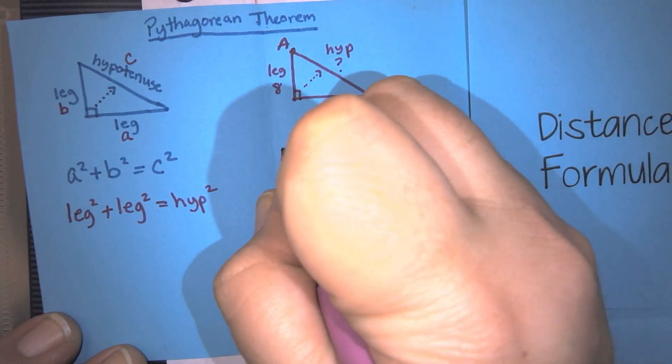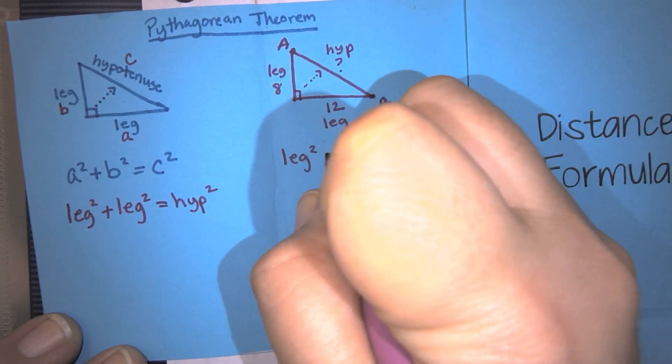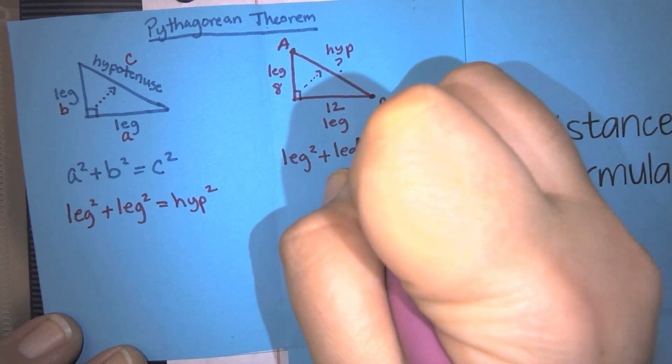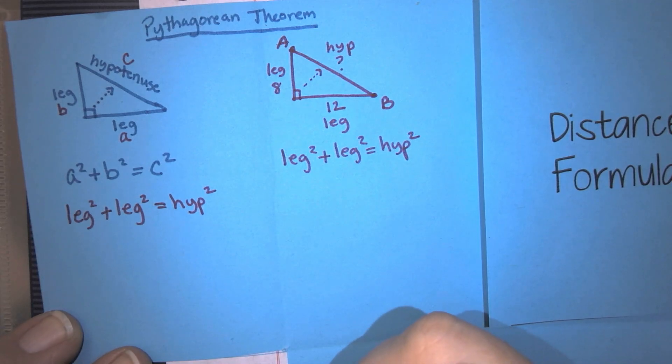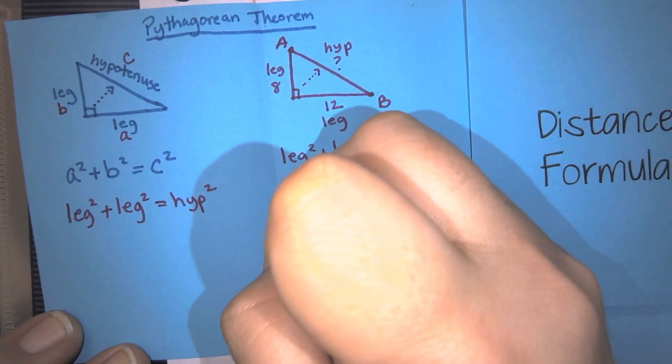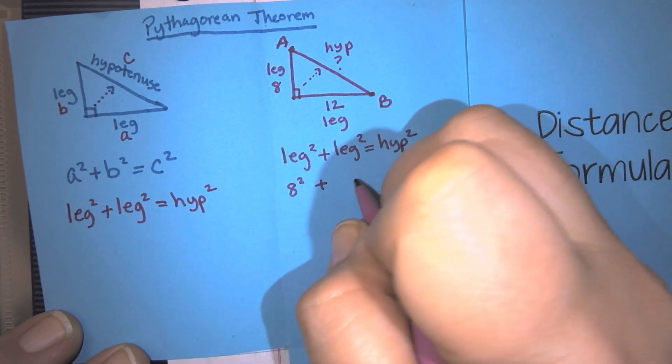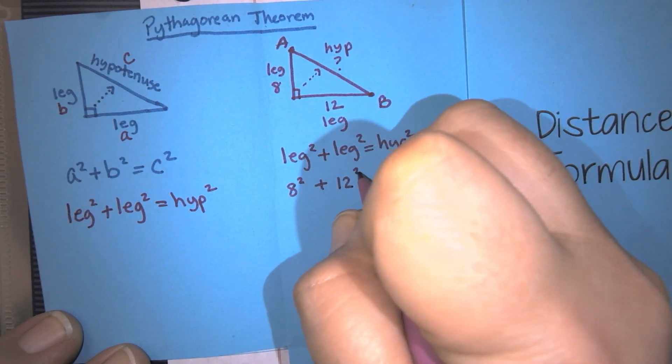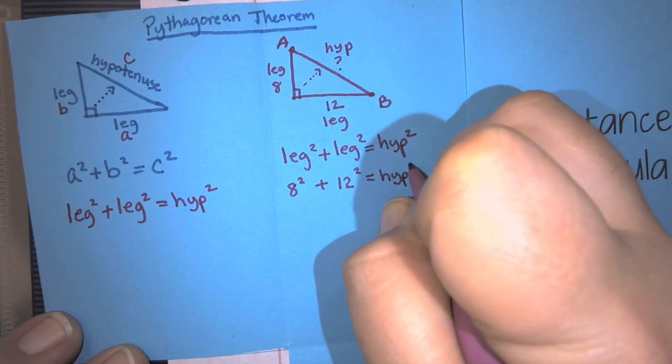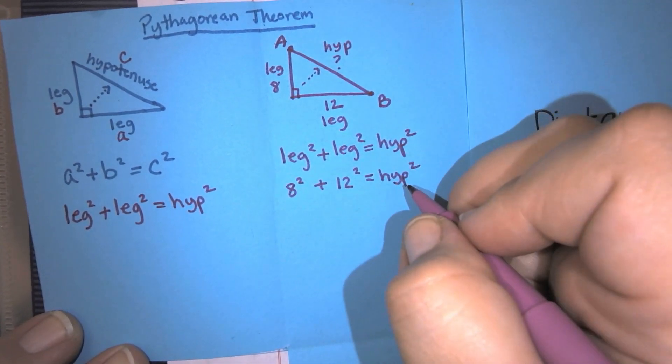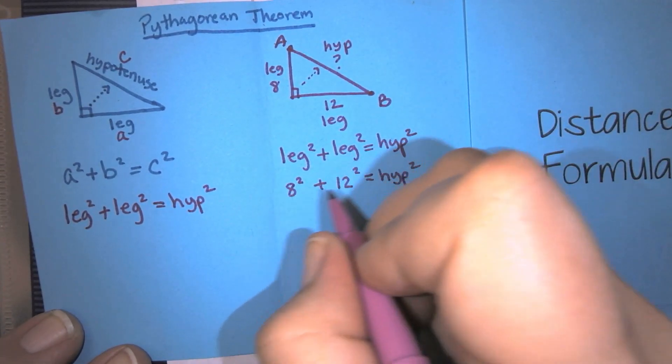So using the Pythagorean theorem, we can set up an equation that will help us figure out this side because I know these two sides. I just need to know two of them and I can find the third one. So if I start with my formula, leg squared plus leg squared equals hyp squared. And I fill in the pieces that I know. One of my legs is 8, so 8 squared, plus the other leg is 12, so 12 squared, equals hyp squared. I'm going to keep hyp here because I don't know that number and I'm going to solve for that.